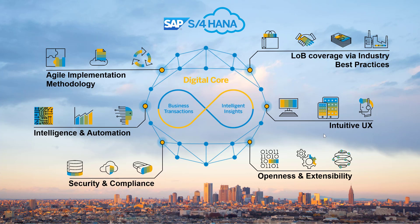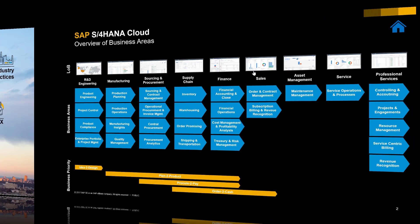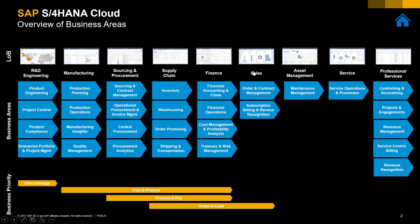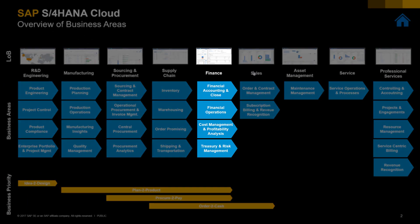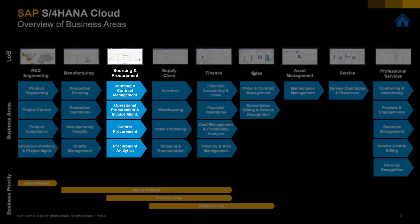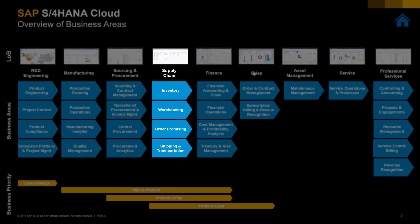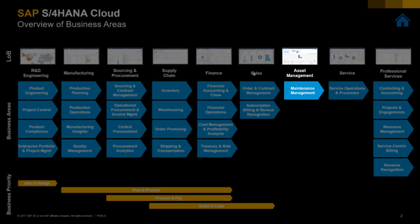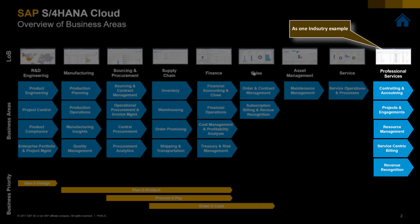Let's take a look at the best practices. This is an overview of the business areas of S4HANA Cloud. Core finance is at the heart of the product and is integrated into R&D and engineering, manufacturing, sourcing and procurement, supply chain and logistics, sales, asset management, service operations, and professional services.